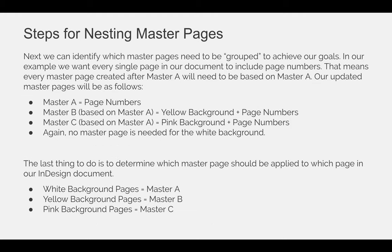Next, we can identify which Master Pages need to be grouped to achieve our goals. In our example, we want every single page in our document to include page numbers. That means every Master Page created after Master A will need to be based on Master A, so that the page numbers from Master A flow automatically onto those other Master Pages. Our updated Master Pages will be as follows.